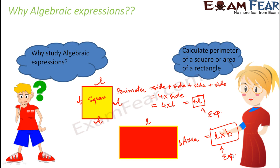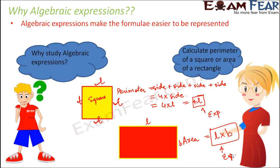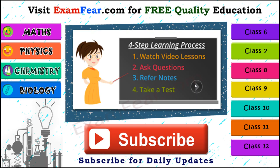So algebraic expressions are widely used in making formulae, and they make the formula easier to represent. Instead of writing perimeter of a square as side plus side plus side plus side, you can write it simply as 4L — which is more simple and easy. And what is that 4L? Nothing but an expression. So algebraic expressions make the representation of your formula easier. Thank you.